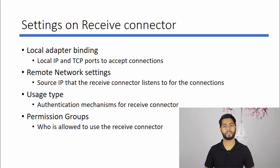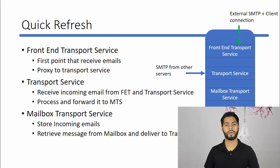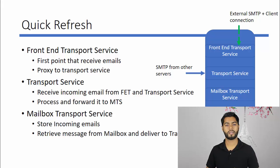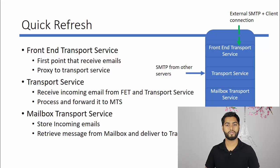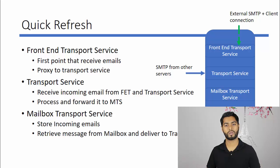Before we dive into receive connectors in detail, I would like to give you a quick refresh on how mail flow works in Exchange Server. There are three services that handle mail flow: Front End Transport Service, Transport Service, and Mailbox Transport Service. Front End Transport Service is responsible for accepting external SMTP connections in Exchange Server — it proxies the inbound SMTP messages to the Transport Service.